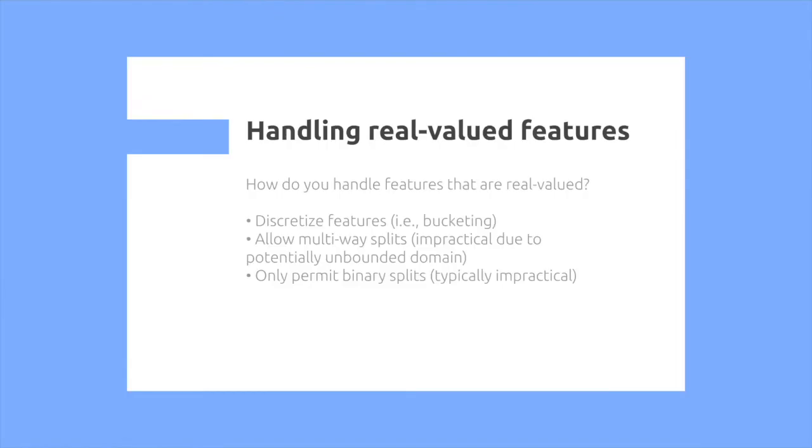So now how do we handle real value features? So a real value feature, for example, would be grades. So we can discretize the features, which is through bucketing. So for example, I can put grades between 3.75 to 4, 3.25 to 3.75, and so on. We can allow multi-way splits, which is very specific, but this is typically impractical, or we can only allow binary splits, which is also impractical. There's actually an algorithm for this, which is pretty interesting.